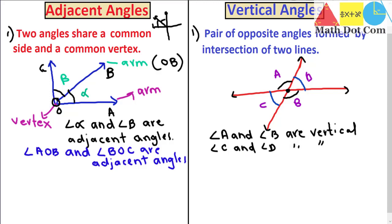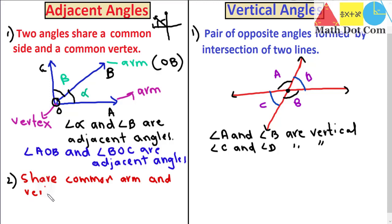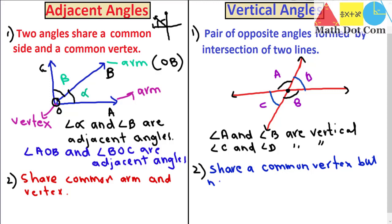To understand vertical angles in detail you can refer to my previous lecture. Now the second difference: adjacent angles share a common arm as well as a common vertex — so they share two things in common. While vertical angles share only a common vertex, but not the arm, because they are opposite to each other.